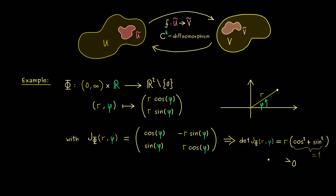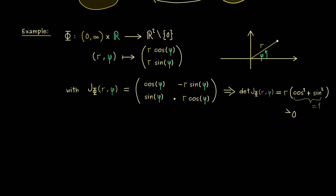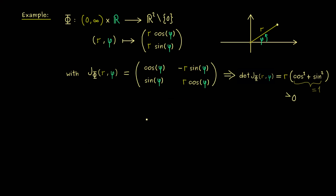Therefore, as we know from the last video, this map has a chance to be a diffeomorphism. However, this is not the case under the global definition, and the reason is simply that capital Phi is not injective, because the angle phi can make more than one full turn. Hence we don't have a global diffeomorphism here. We might repair this by changing the domain, but then in the end we also have to remove half an axis in the image. So it's possible to get a diffeomorphism, but we have to change the domain and codomain even more — and that already goes in the direction of a local definition.